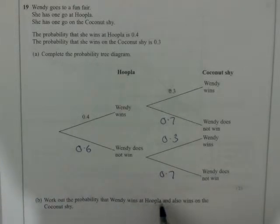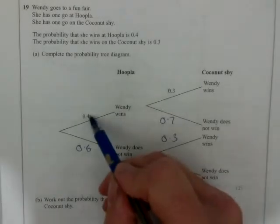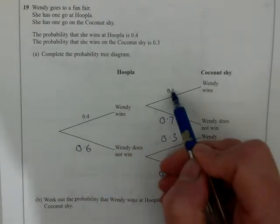Now, work out the probability that Wendy wins at hoopla and also wins at coconut shy. So it's 0.4 times 0.3, because it's win at hoopla.